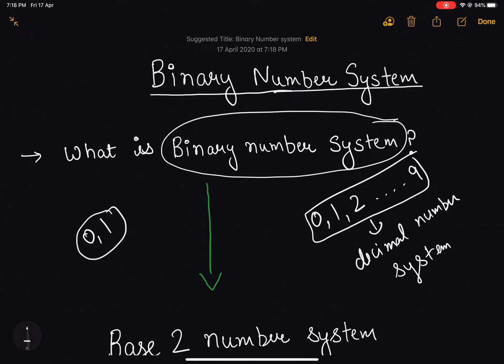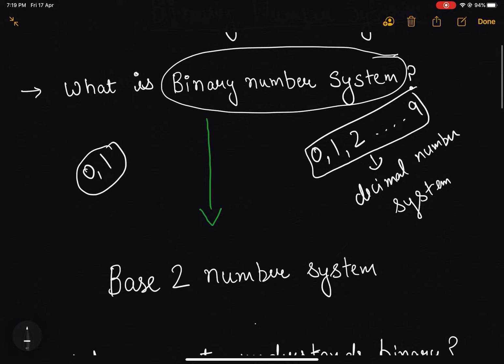Now if a number has n digits, we say that the base of the number system is n. So the decimal number system can also be called as base 10 number system. Similarly, binary number system can also be called as base 2 number system.